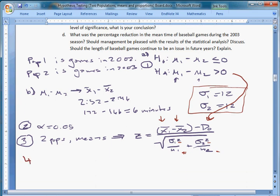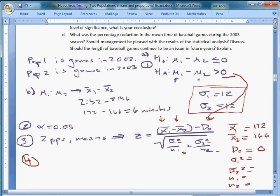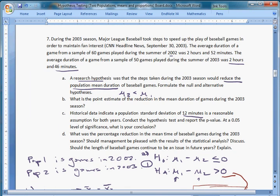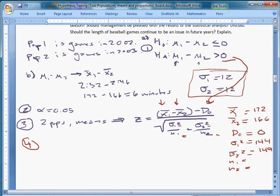Step 4 is going to be to compute these. So let's write down all the stuff I need: X̄₁, X̄₂, D₀, σ₁², σ₂², n₁ and n₂. I can pull all this stuff out of the question from different places. X̄₁ is 172, X̄₂ is 166, D₀ is 0. σ₁² is going to be 144, σ₂² is going to be 144. We had a sample of 60 games the first time and 50 games the second time, so 60 and 50 are n₁ and n₂. They're not going to be exactly the same, which means we're going to have to be careful about that.